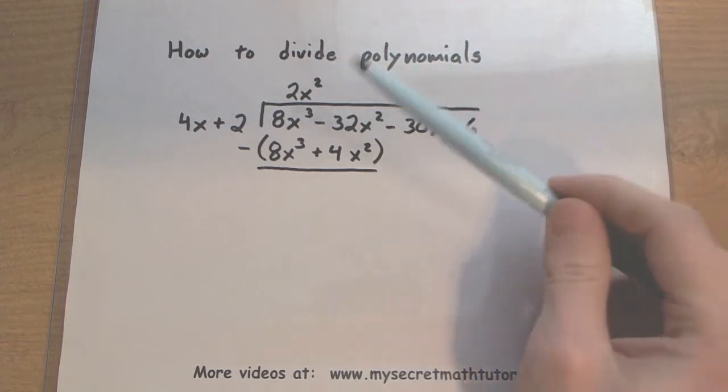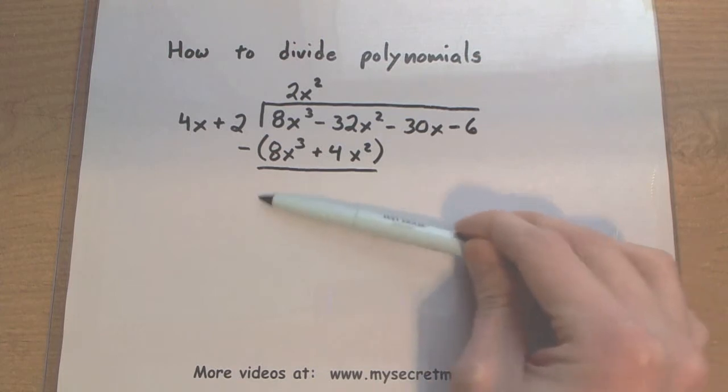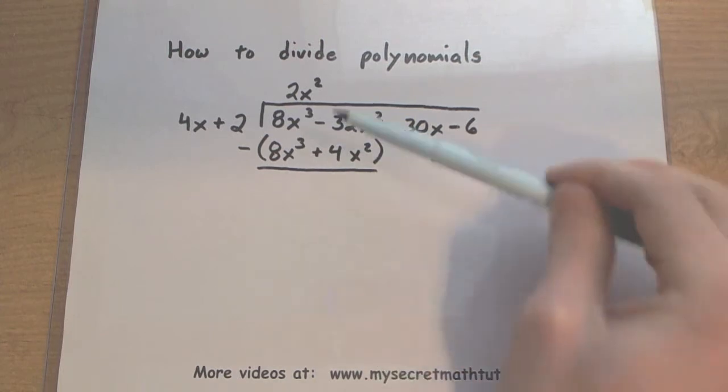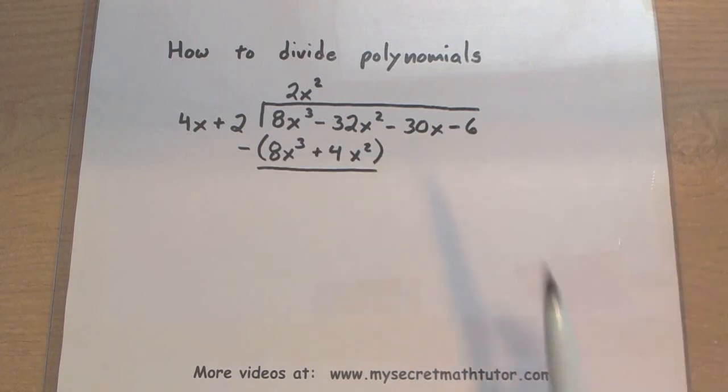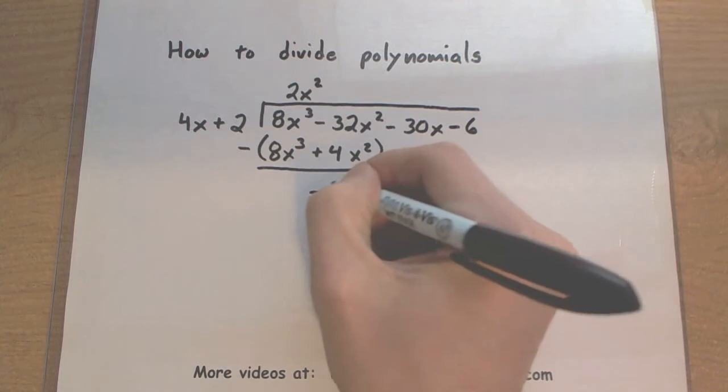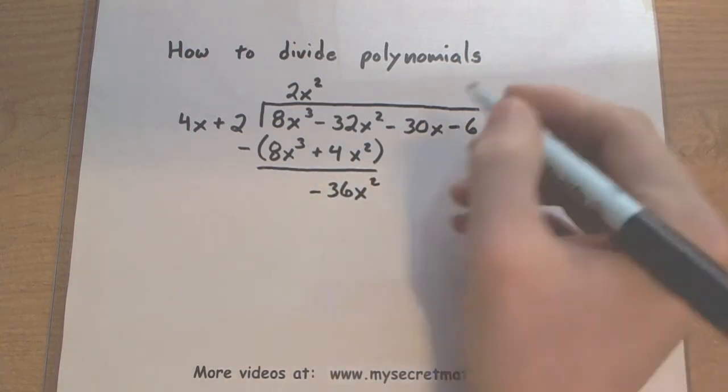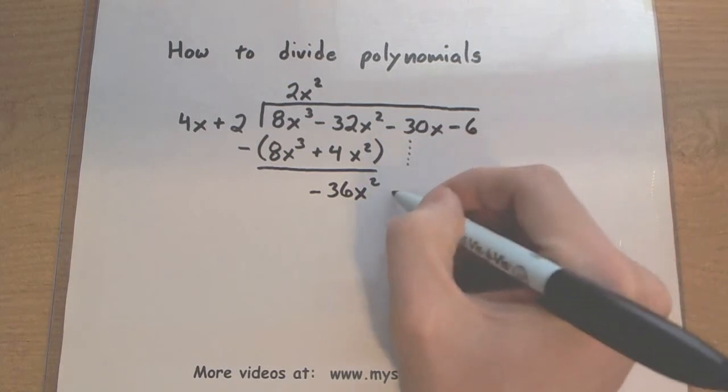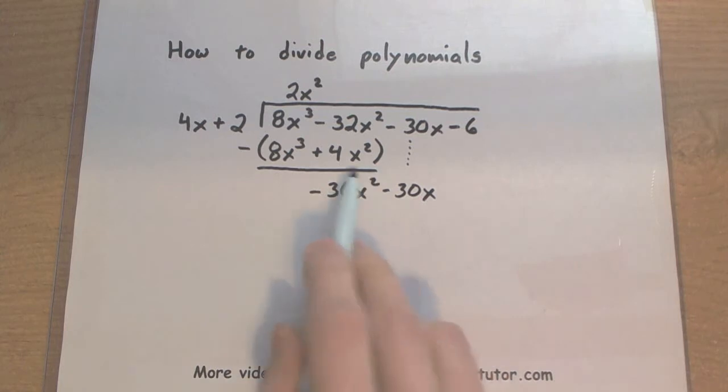And let's subtract away these terms. So I have 8x cubed minus 8x cubed. So that will give me basically a 0. Minus 32x squared minus 4x squared. So negative 32 minus 4 is a negative 36x squared. So that was the entire process. Let's go ahead and see it again as we do it for this expression.